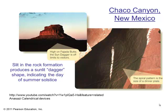This next one is the ancient Native American settlement known as Chaco Canyon in New Mexico. Sunlight shines between two slabs of stone high on the side of a 440-foot-high Fajada Butte to form a dagger of light on the cliff face. About noon on the day of the summer solstice, the dagger of light slices through the center of a spiral pecked into the sandstone.